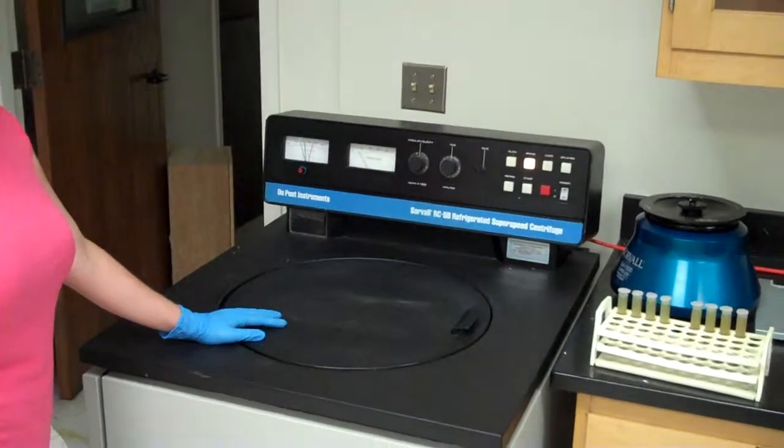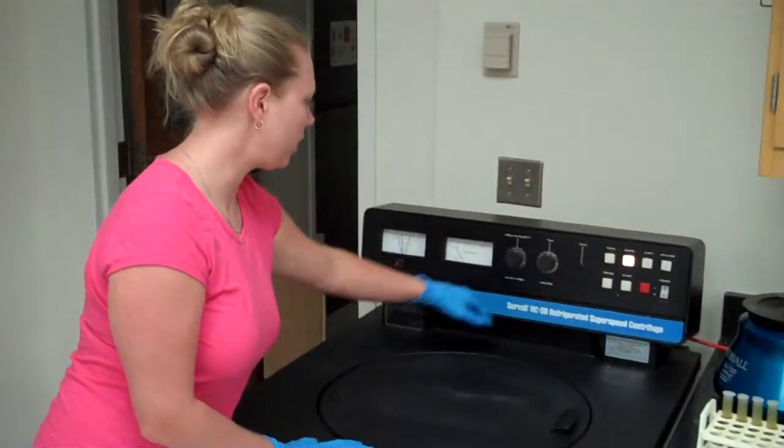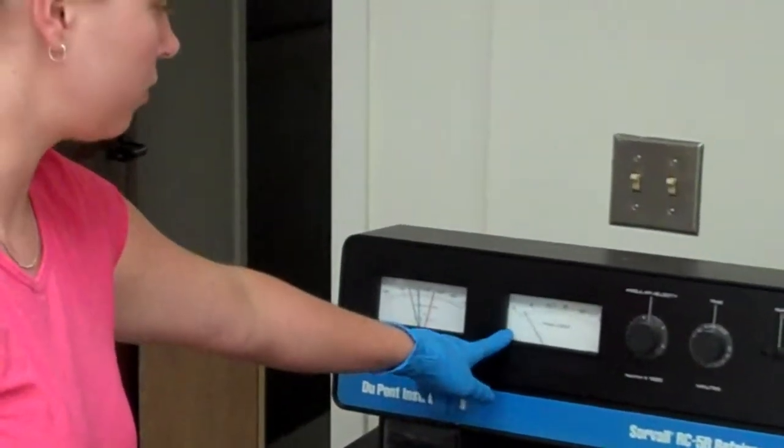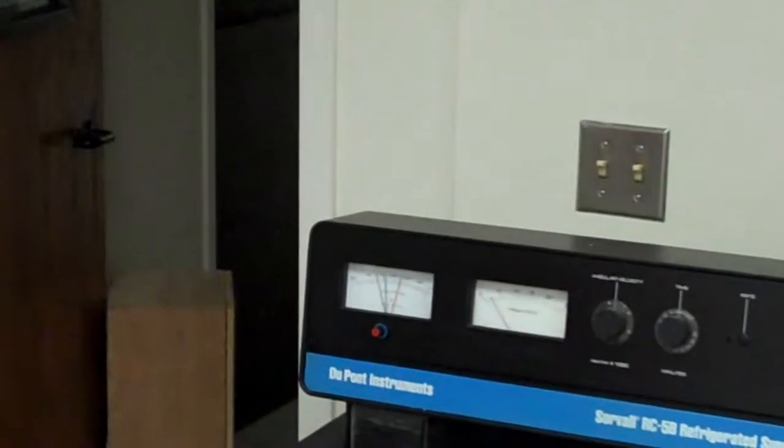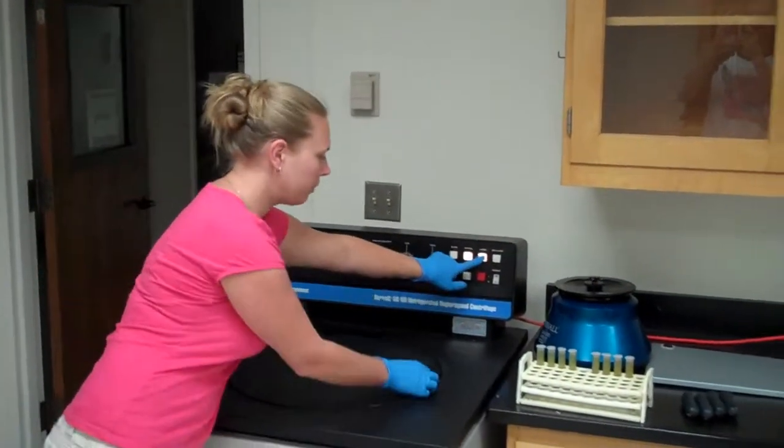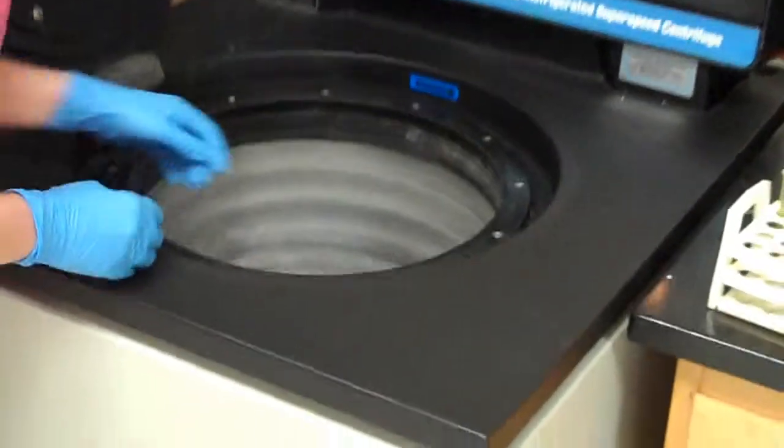So we're ready to load our samples up. We turn the timer to stop and wait until this dial gets down to zero. The centrifuge will not open until it's at zero. Once the centrifuge has stopped running, push the door button, which opens up the centrifuge.